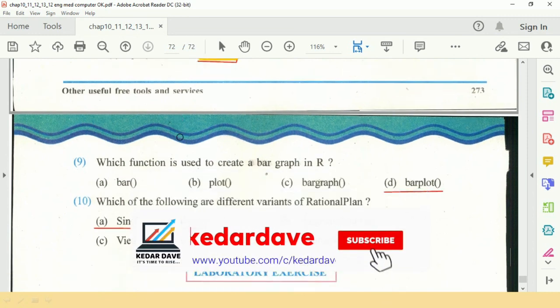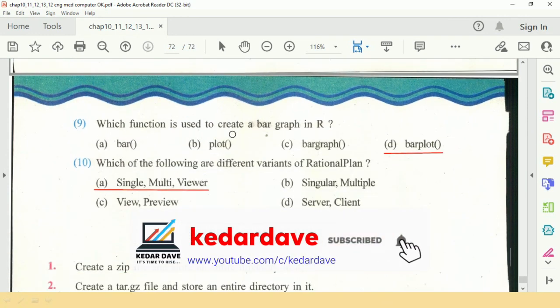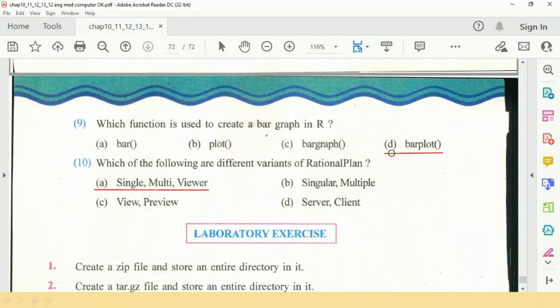Question number 9 is which function is used to create a bar graph in R? So barplot is used. Last question is which of the following are different variants of RationalPlan? Those are Single, Multi-Viewer, Multiple, and Mule.